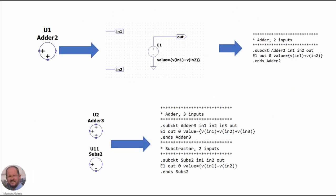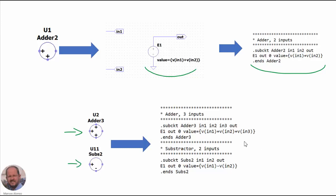So let's see how to implement the different components, starting with the adder. This is the element that we want to implement with two inputs and one output. We can do this very easily by using a behavioral voltage source with two inputs — we only have to generate a value that is the addition of both inputs. The three-input adder and the subtractor implementations are very similar; we only have to add the three input voltages, or do input voltage one minus input voltage two to generate the output voltage of the subtractor.